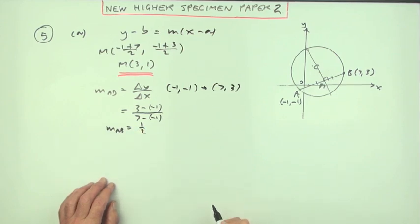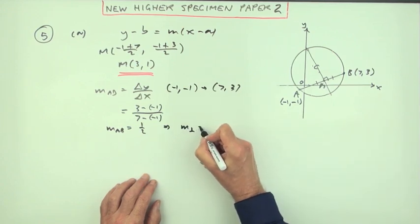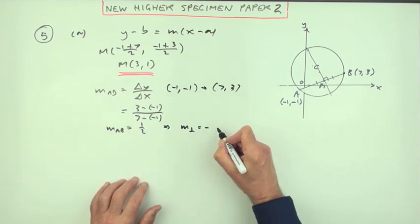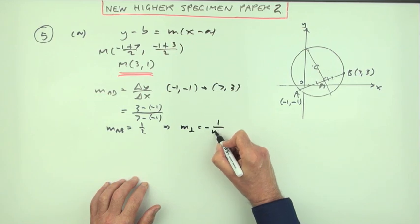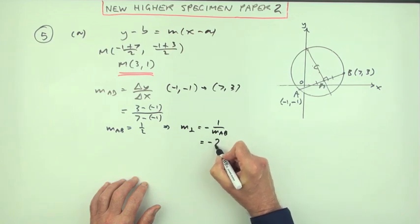The gradient of that chord is a half. That means the gradient I'm looking for, the perpendicular gradient, will be the negative of the reciprocal. You can spell it out if you like: -1 over m_AB, but you can just jump in straight with -2.